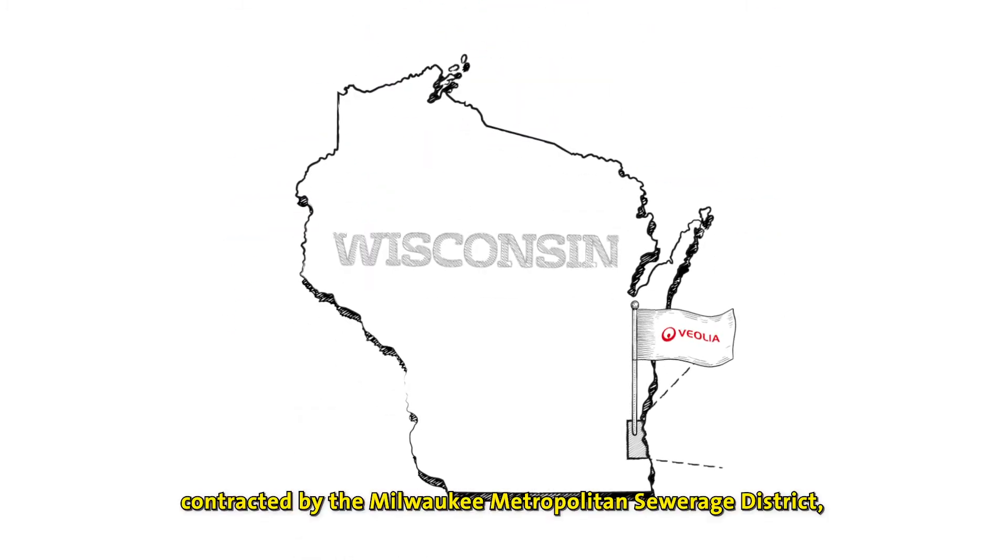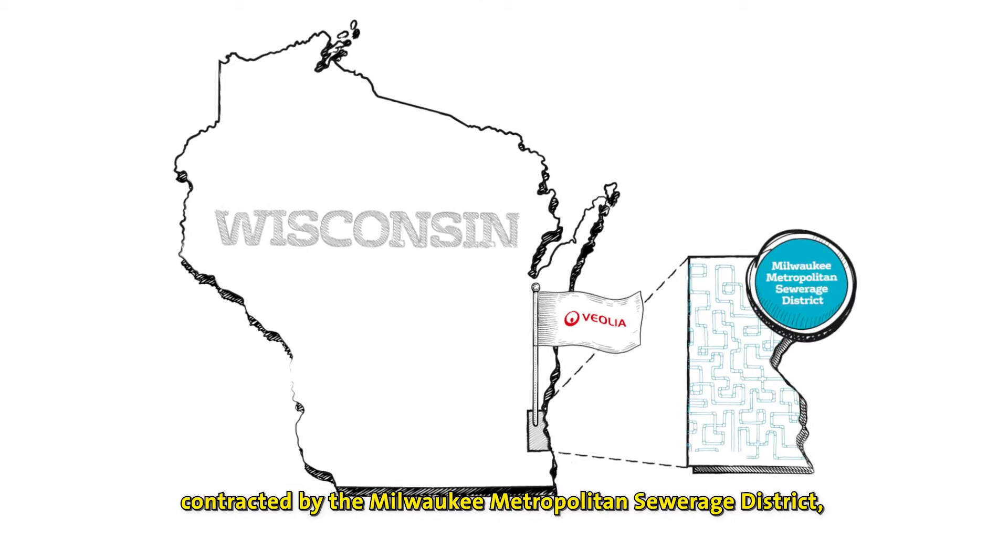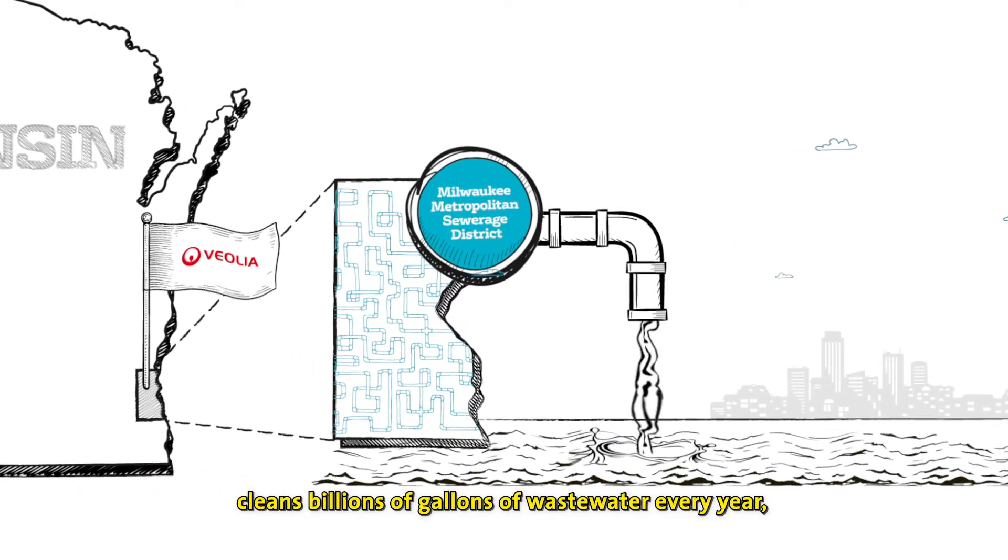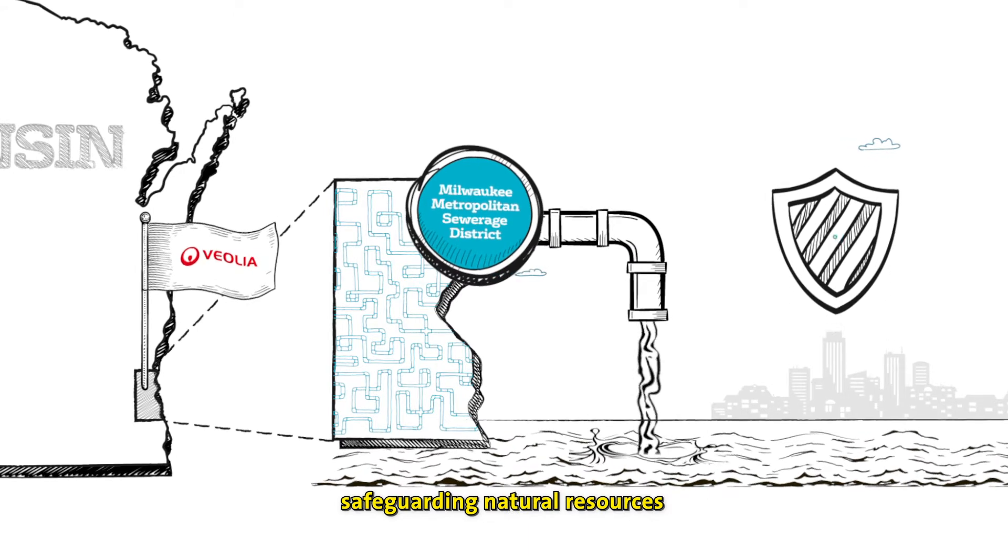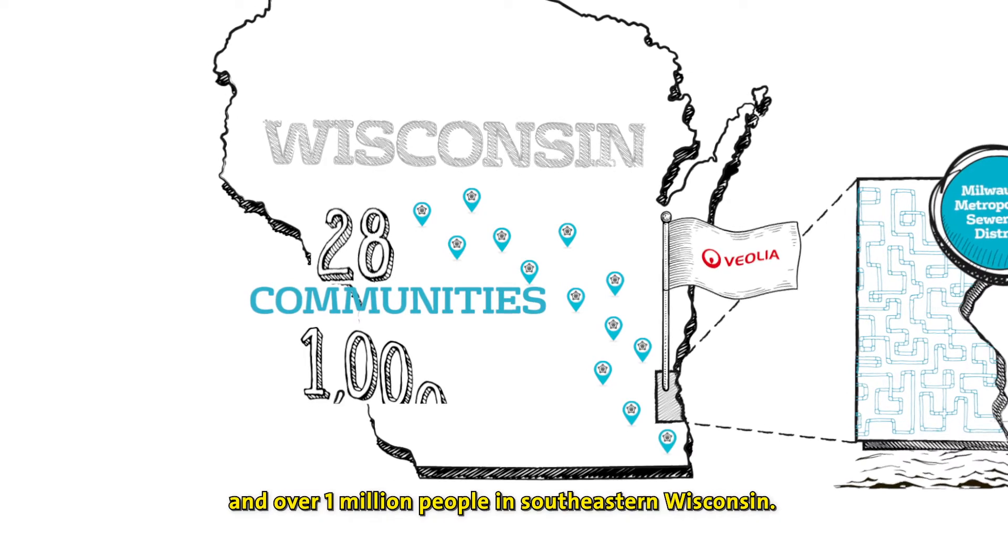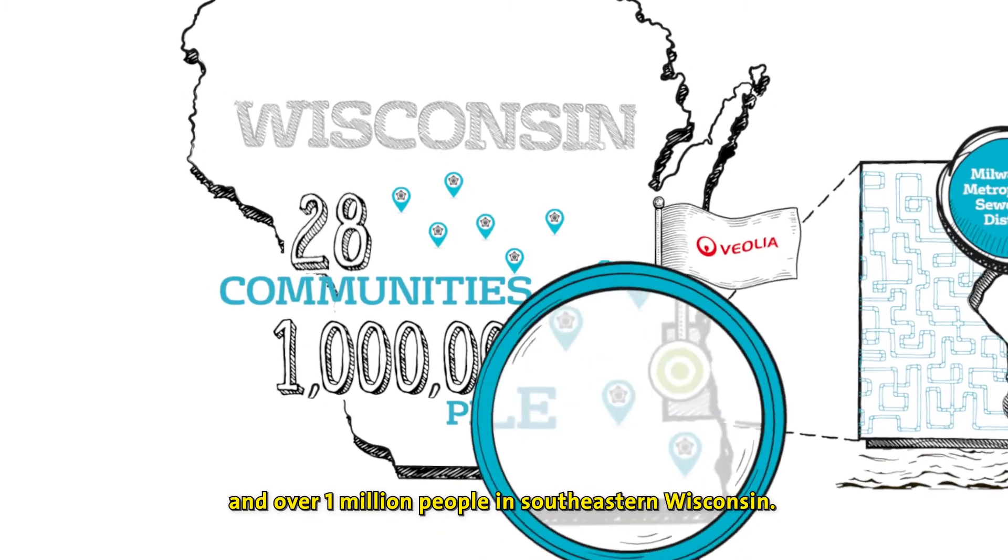Veolia Water Milwaukee, contracted by the Milwaukee Metropolitan Sewerage District, cleans billions of gallons of wastewater every year, safeguarding natural resources and protecting public health for 28 communities and over 1 million people in southeastern Wisconsin.